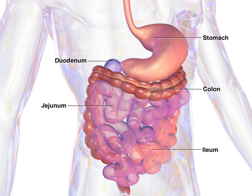The upper gastrointestinal tract consists of the mouth, pharynx, esophagus, stomach, and duodenum. The exact demarcation between the upper and lower tracts is the suspensory muscle of the duodenum. This differentiates the embryonic borders between the foregut and midgut, and is also the division commonly used by clinicians to describe gastrointestinal bleeding as being of either upper or lower origin.